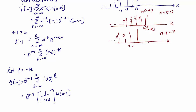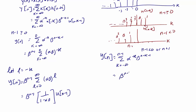For the other summation, n−1 < 0, or n < 1, the summation runs from k = −∞ to n−1 of α^(−k) · β^(n−k−1). Once again we take out β^(n−1), and the summation becomes from k = −∞ to n−1 of (αβ)^(−k).